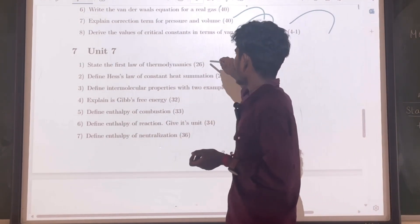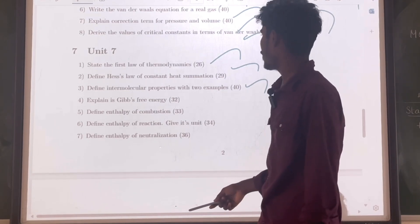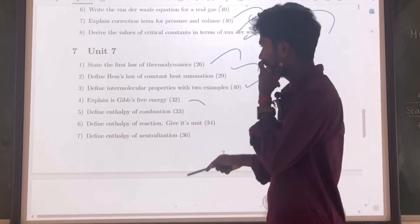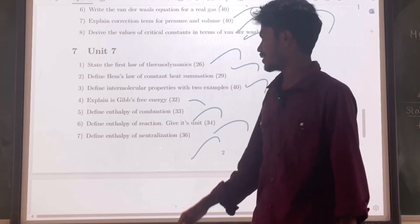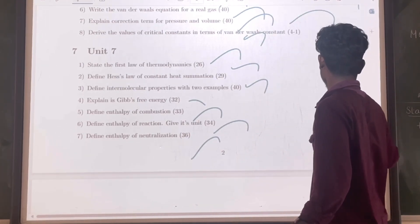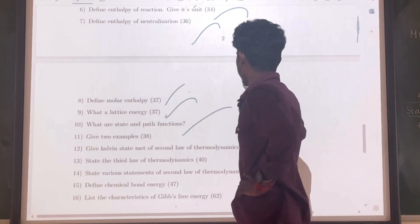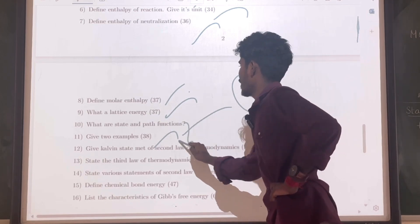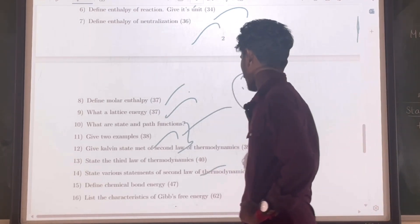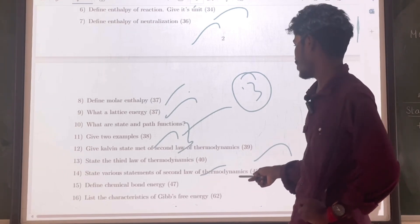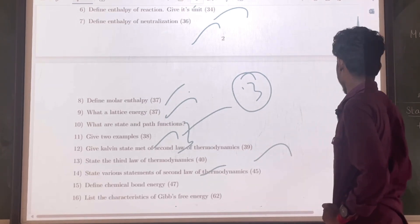Unit 7. Question number 26: First law of thermodynamics. Question number 29: Hess's law of constant heat summation. Question number 40. Question number 32: Define intermolecular forces. Question number 33: Gibbs free energy — very important. Question number 34: Enthalpy of combustion. Question 36: Enthalpy of reaction. Question 37: Molar enthalpy. Question 38: Lattice energy — state and path important, 3 mark question. Kelvin's statement of the second law of thermodynamics. State the third law of thermodynamics — question number 40. Question 45: State the various statements of the second law of thermodynamics. Question 47: Chemical bond energy. Question 62: List the characteristics of Gibbs free energy — very very important question.